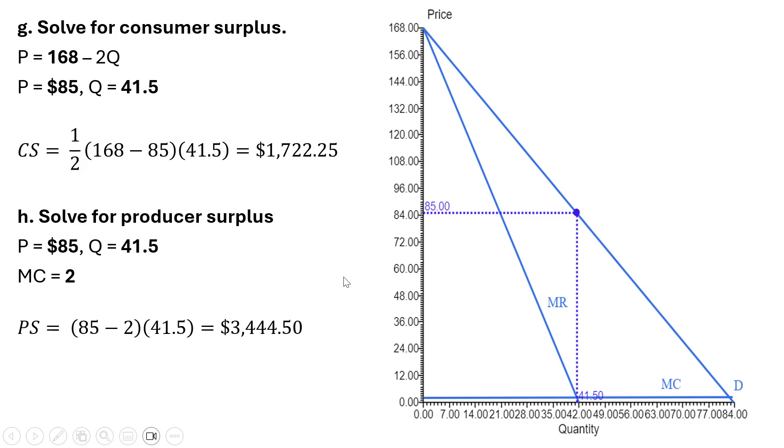Now let's solve for producer surplus. Producer surplus is going to be the difference between the market price and the marginal cost curve. It's going to be this entire area. This happens to be a rectangle in this case. So the area of a rectangle is just width times length. The market price, the marginal cost, so the difference there. And then that's going to be over the number of units that the monopolist sells, 41.5. So producer surplus here of about $3,400.